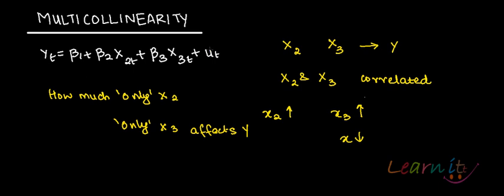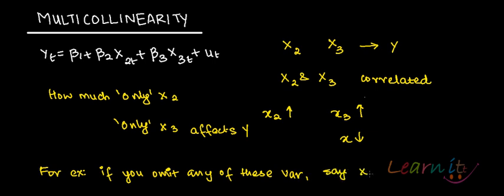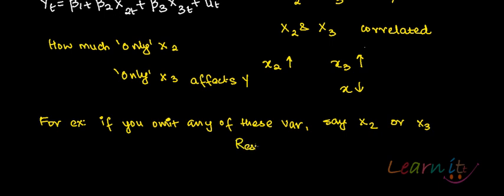And the problem is that even if you omit one of these variables, say x2 or x3, then the results could be significantly altered. The results which the regression equation is going to give could be significantly altered.